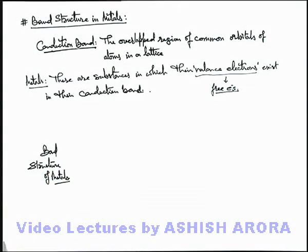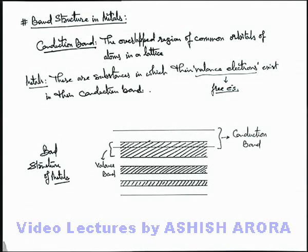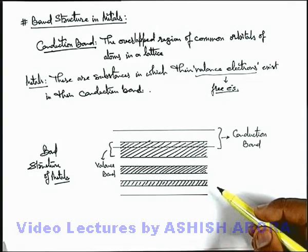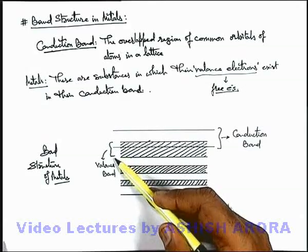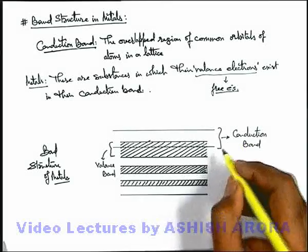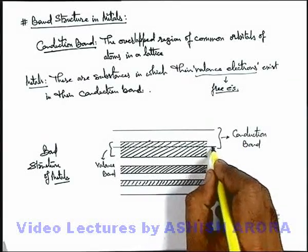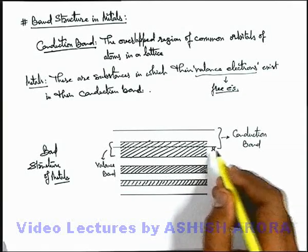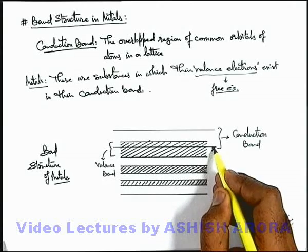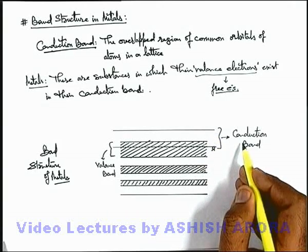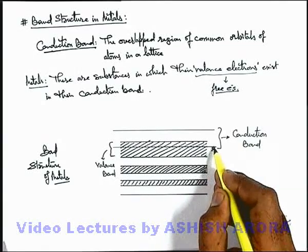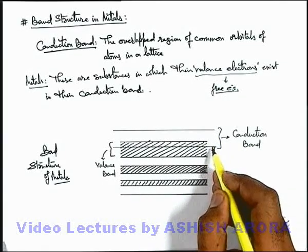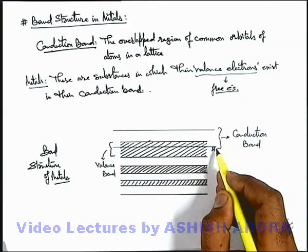This picture gives you an idea about a typical metal band structure. In this band structure you can see that if this is the valence band of a typical lattice, and this is the conduction band — or this is the point X where the overlapping between atom band structures starts — then all these energy levels above point X can be considered to be in the conduction band, making a common orbital in which electrons are free to move.